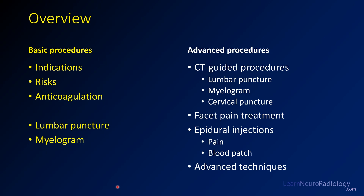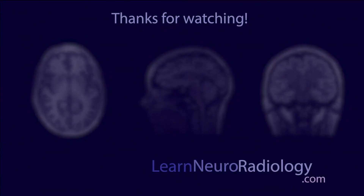In conclusion, we've gone through a number of basic procedures — indications and risks, anticoagulation considerations including platelets above 50,000 and INR 1.5 or less, and how to perform a lumbar puncture and myelogram. In future videos, we'll talk about more advanced procedures including CT-guided procedures, pain procedures, and advanced techniques. Thank you for watching. If you enjoyed it, check out our other videos and subscribe, or visit our website at learnneuroradiology.com.